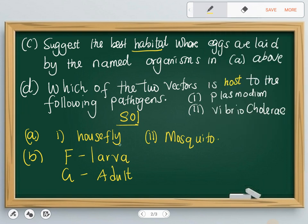Which one of these is a host to this and host to that? When we say a host it means to carry. So in short, which one among these carries plasmodium and which one carries vibrio cholera? For plasmodium, it's a mosquito because that's a pathogen that causes malaria.